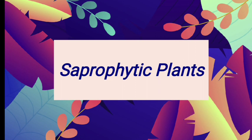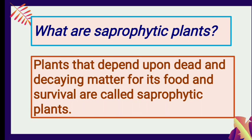What are saprophytic plants? Plants that depend upon dead and decaying matter for their food and survival are called saprophytic plants. When dead leaves and animals start decaying, these plants grow over them and take all the nutrients and food from that dead and decaying matter.